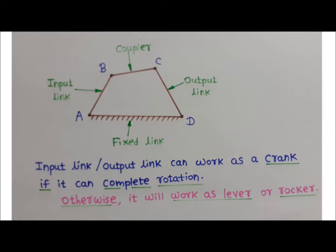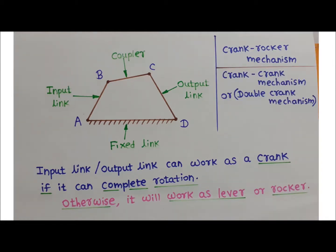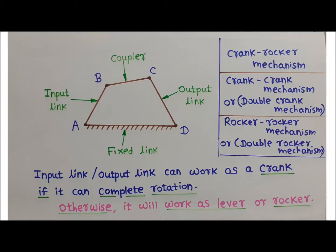There are different possibilities in a four-bar linkage. We can have a crank-rocker mechanism, where the input link works as a crank and the output link works as a rocker. Another possibility is the crank-crank mechanism, also known as the double crank mechanism, where both input and output links work as cranks. There is also the rocker-rocker or double rocker mechanism, where both input and output links work as rockers.